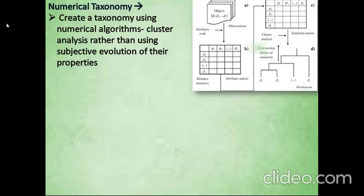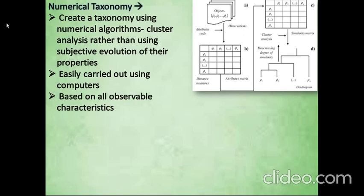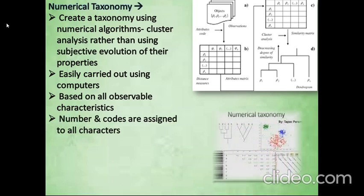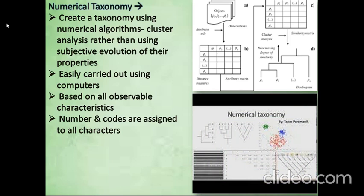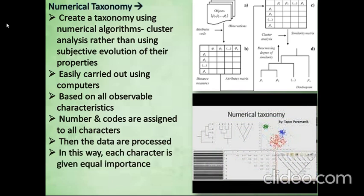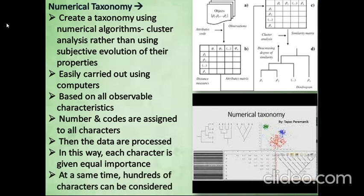Now we will talk about Numerical Taxonomy. It creates a taxonomy using numerical algorithms, cluster analysis, rather than using subjective evaluation of their properties. It is easily carried out using computers and based on all observable characteristics. Numbers and codes are assigned to all the characters. Then the data are processed. In this way, each character is given equal importance. At the same time, hundreds of characters can be considered.